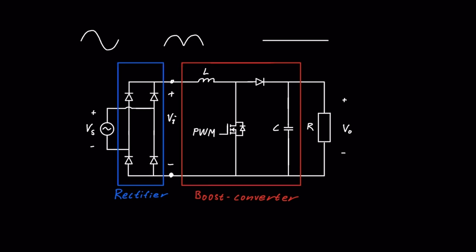When analyzing the PFC, we assume that the power factor is 1, which means that the current and the voltage have the same waveform. So the current from the source has this waveform, the input current to the boost has this waveform, and the load current has this waveform.